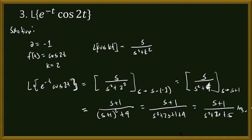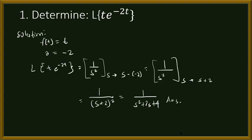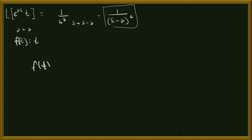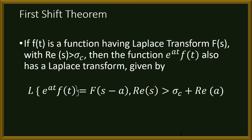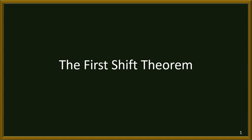That will be all for this discussion on the First Shift Theorem. The key steps are: find f(t) and 'a', get F(s) — the Laplace transform of f(t) — then substitute s with s - a in that Laplace transform. That is how we use the First Shift Theorem. I hope you understand something in this video, and as always, enjoy.